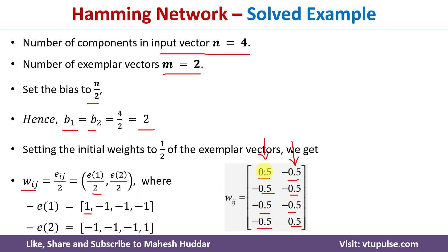For example, the first component of E1 is 1, so 1/2 = 0.5. The second component is −1, so −1/2 = −0.5, and so on. For the second exemplar vector, the first component is −1, so −1/2 = −0.5, the second is also −1, giving −0.5, and so on. Now that we have set the bias and the initial weight matrix, we apply the Hamming network algorithm to assign each input vector to a cluster.